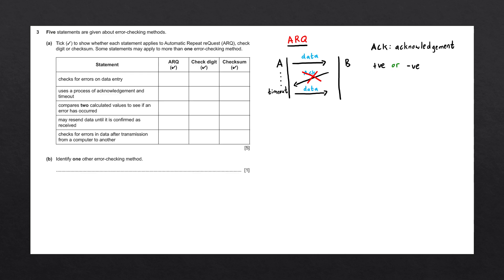Going through the statements for ARQ: 'Checks for errors on data entry' — ARQ is a data transmission method, not data entry, so this does not apply. 'Uses a process of acknowledgement and timeout' — yes, this applies. 'Compares two calculated values to see if an error has occurred' — with ARQ we're not doing comparisons, so this does not apply. 'May resend data until it is confirmed as received' — since the process repeats until a positive acknowledgement is received, this applies. 'Checks for errors in data after transmission from one computer to another' — ARQ checks during transmission, so this does not apply.